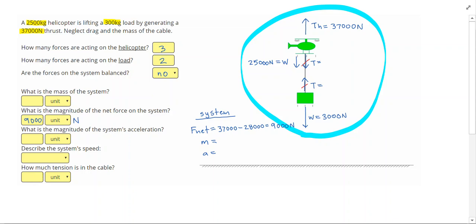It says, what's the mass of the system? So basically, how many kilograms are moving? Well, the helicopter and the load are both moving, so I'm going to add those together. So you'll notice for the net force,